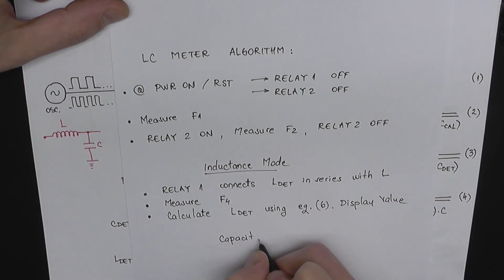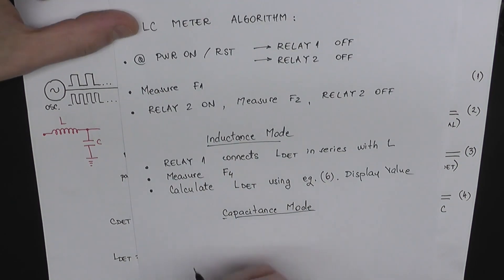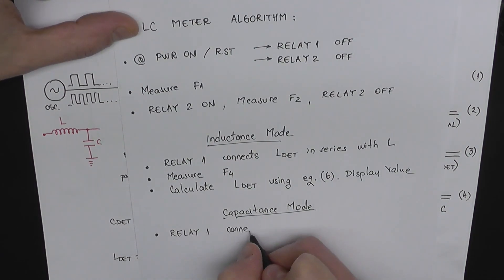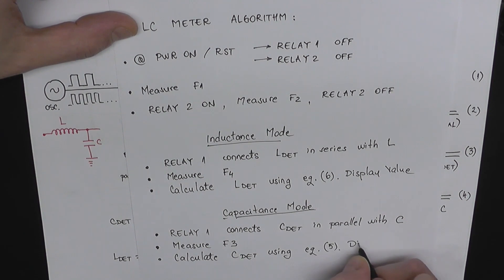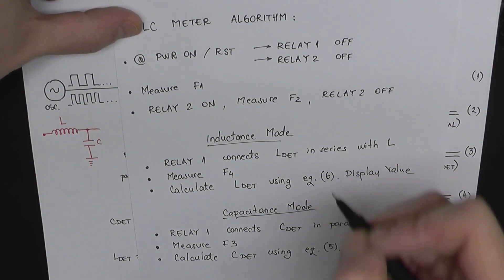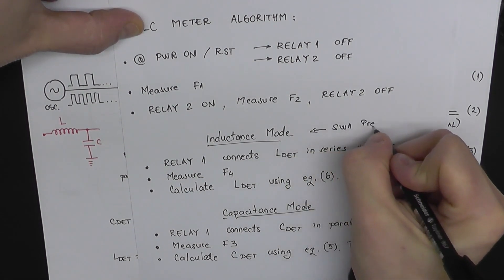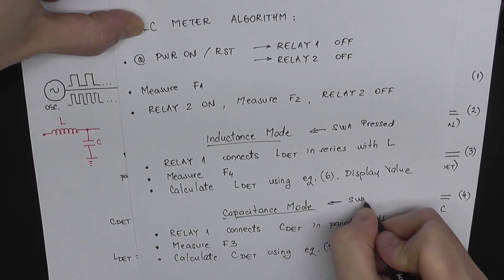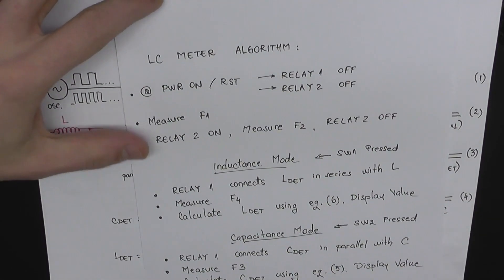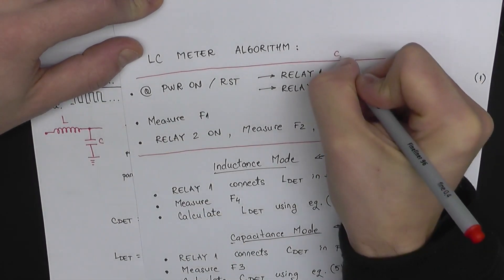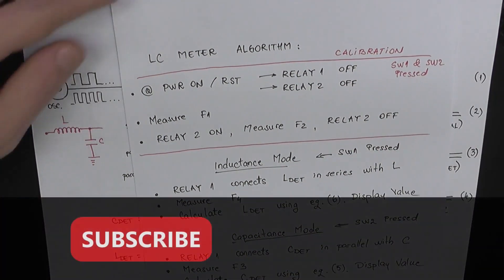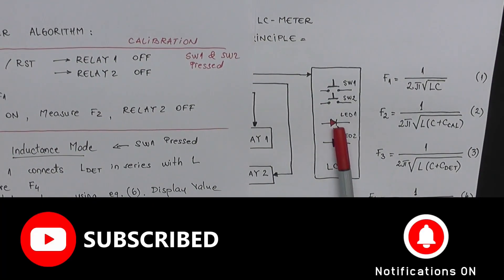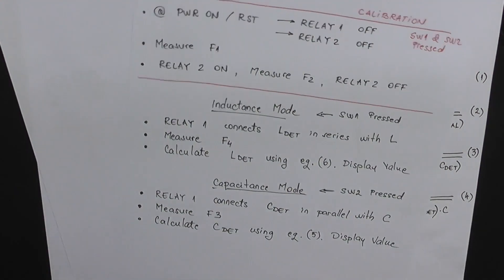And if we do a capacitance measurement, we do all the same steps, the difference being relay 1 will connect the capacitance that we want to measure in parallel with the oscillator's capacitor, and we use equation number 5 to determine the capacitance. We're going to use the push buttons to switch between these modes. And we can also say that these first three steps are the calibration steps, and we can re-enter calibration whenever we press both keys at the same time. And we'll use the LEDs to signal which operating mode is currently selected.